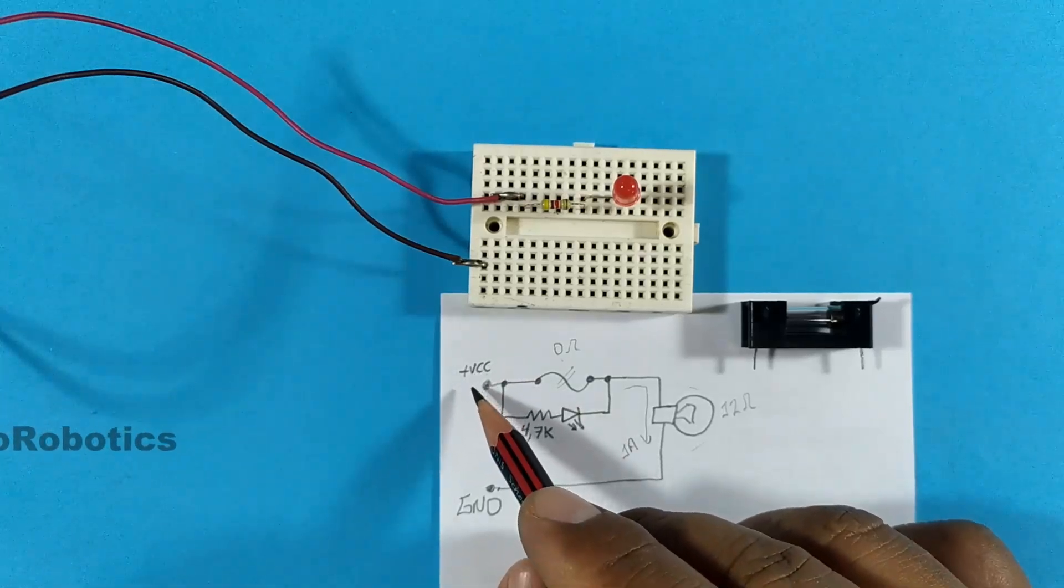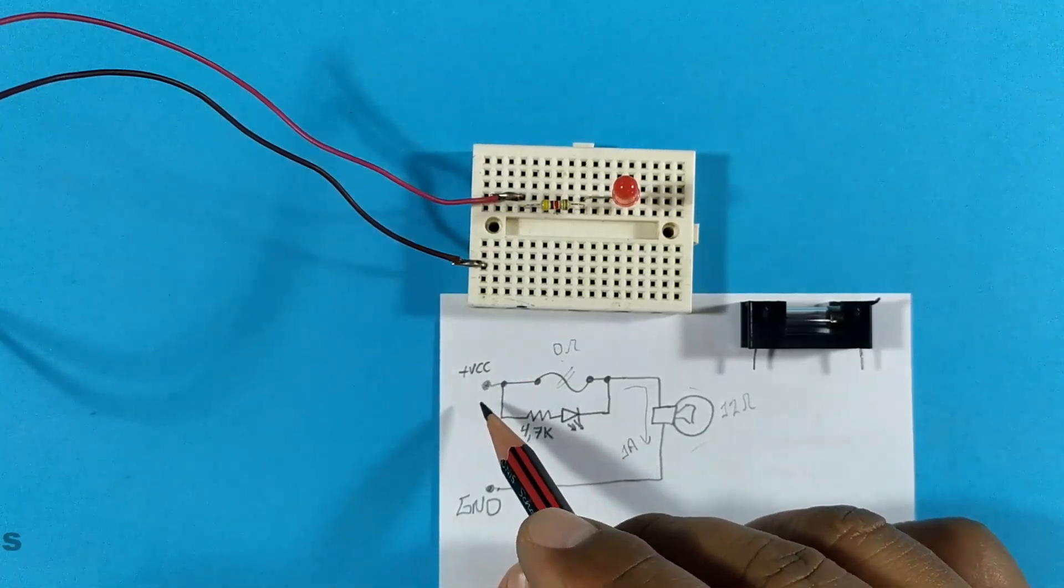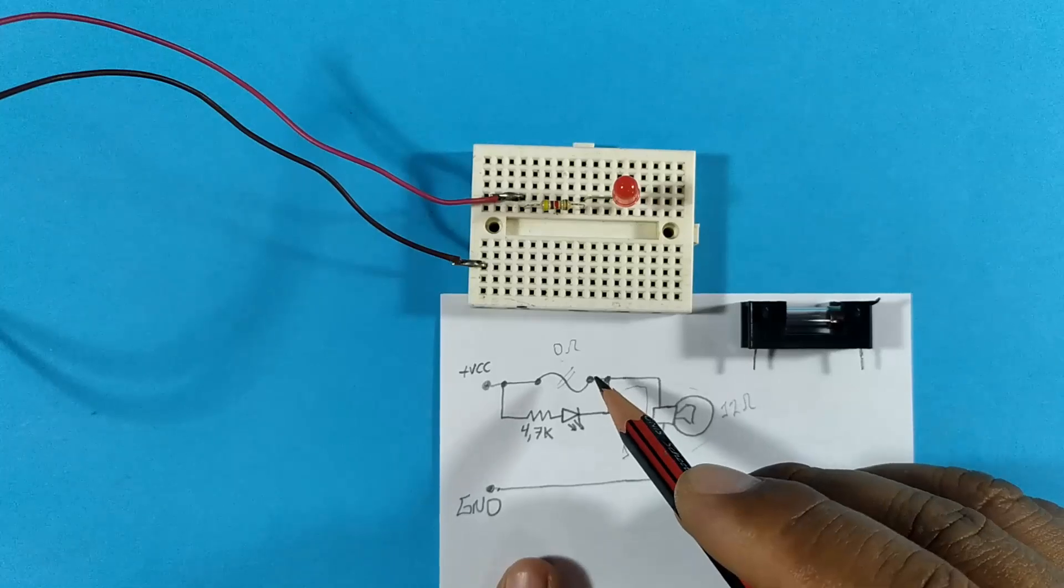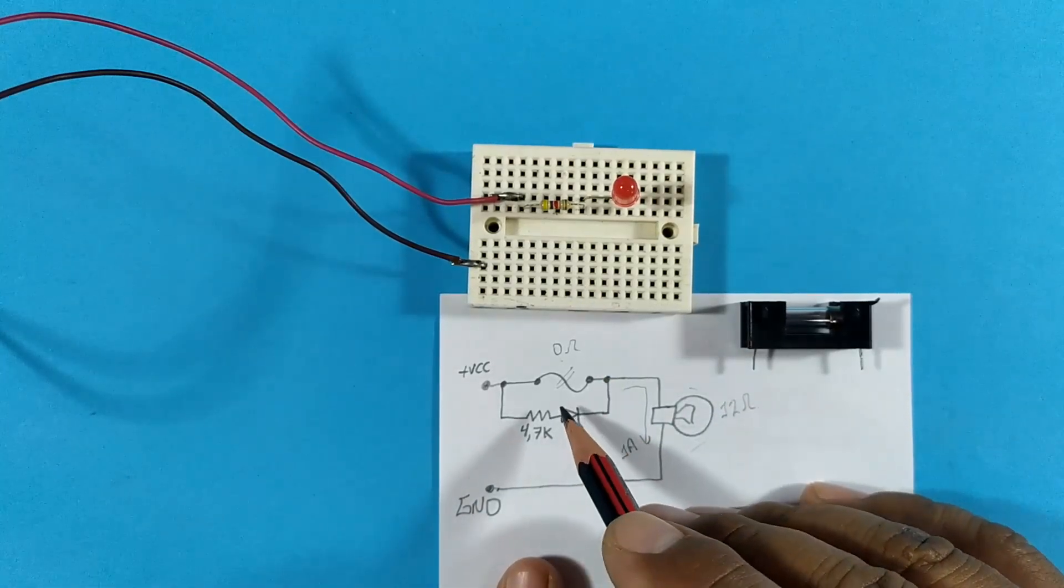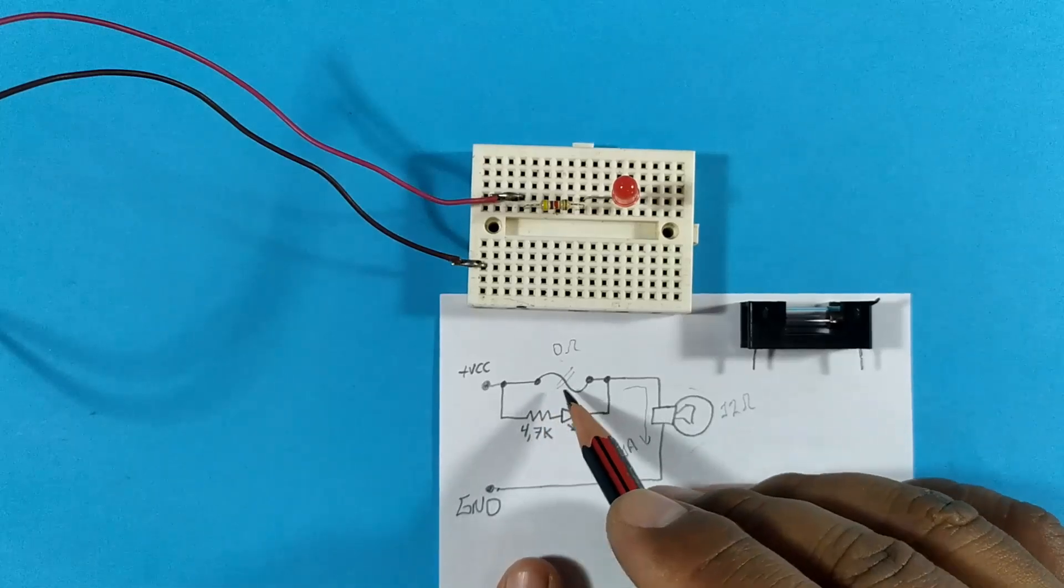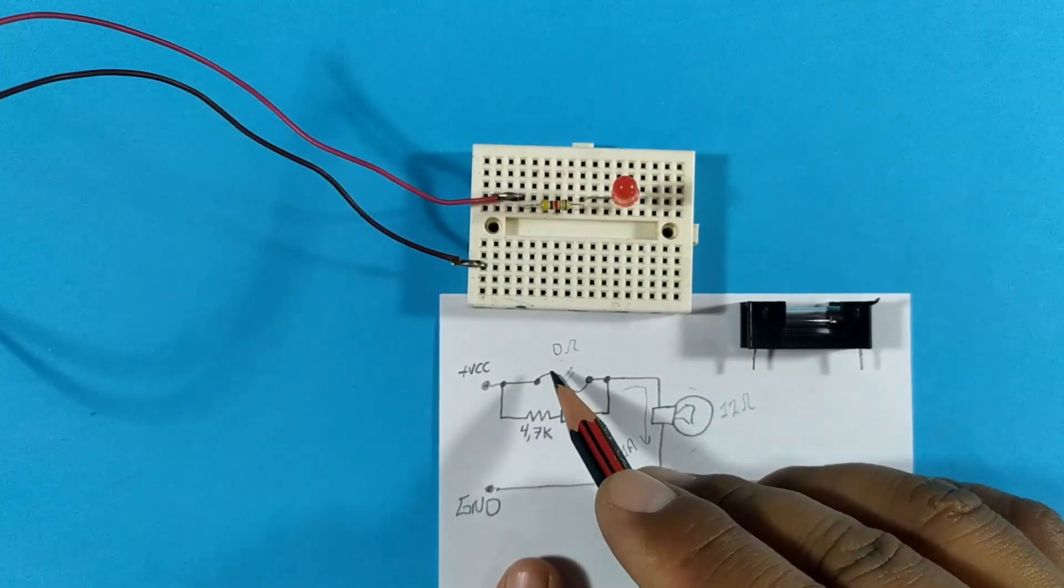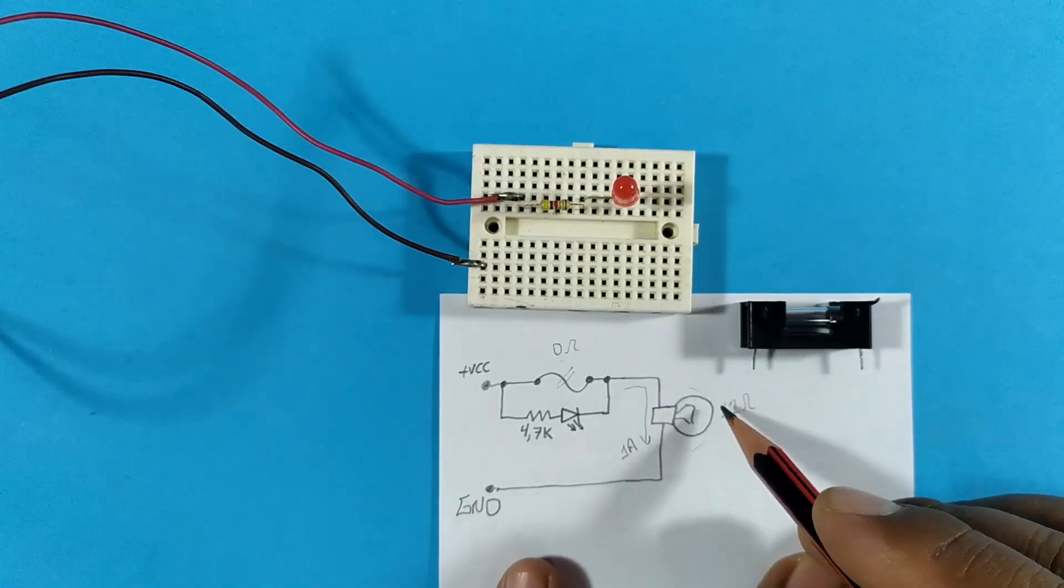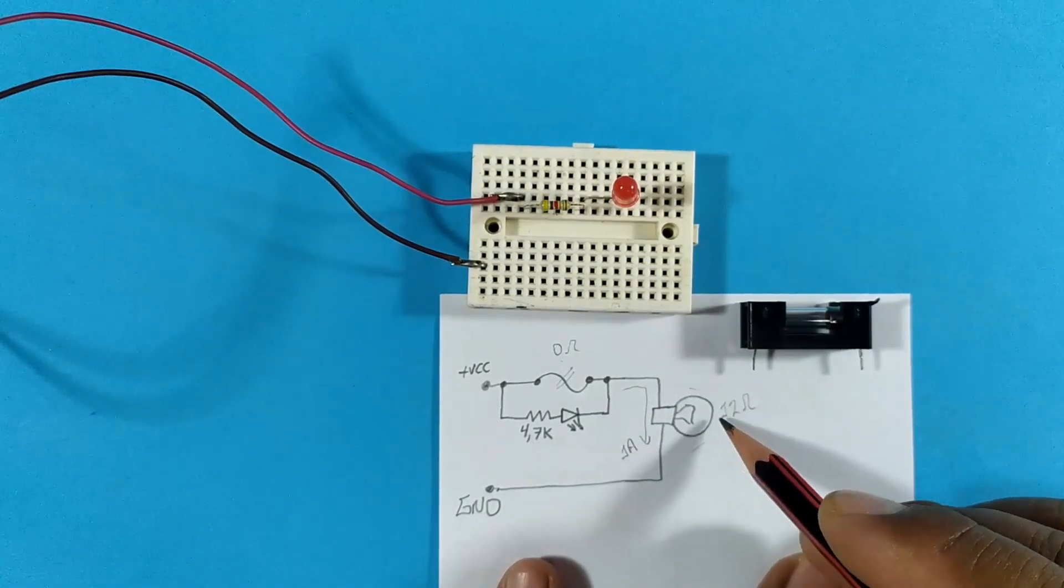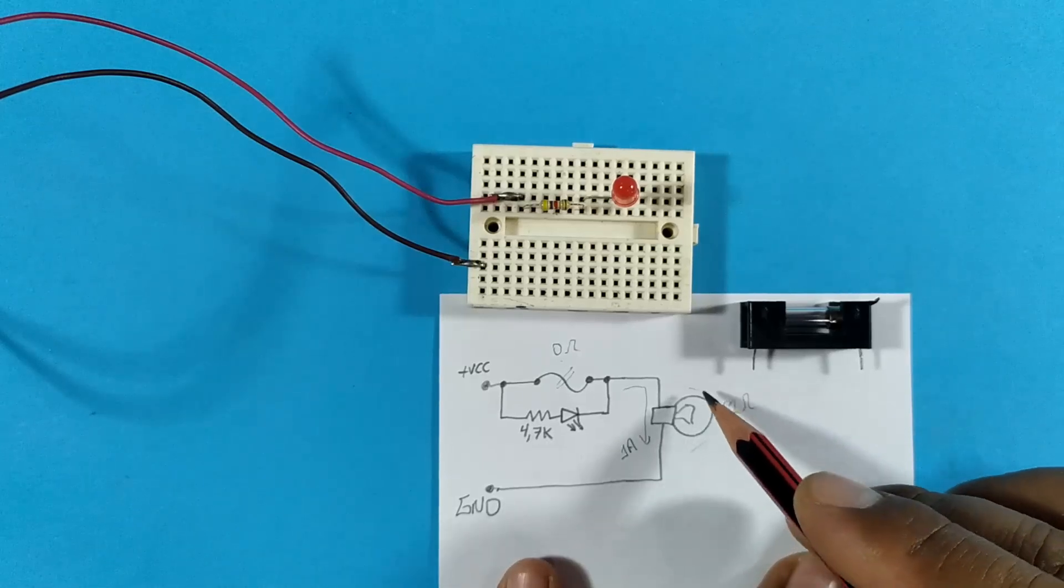Here we can feed it with 5, 12, or 24 volts, which shouldn't present any problems for the quarter watt resistor. Now when we have the fuse in good condition, we have 0 Ohms here and 12 Ohms in this place. Most of the voltage, or rather all of the voltage from the source will fall on the load or bulb.